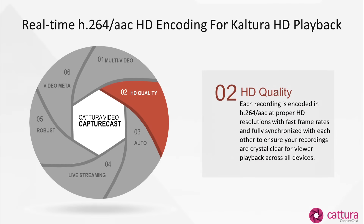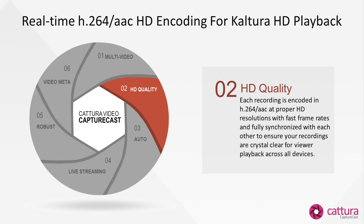Each of the recordings is encoded in H.264 AAC at the proper HD resolutions and good frame rates you would come to expect with multi-source recording. Each encoded file has its own profile, so setting proper frame rates and resolution can be done on the fly per source, and each of these recordings can produce an HD quality feed.